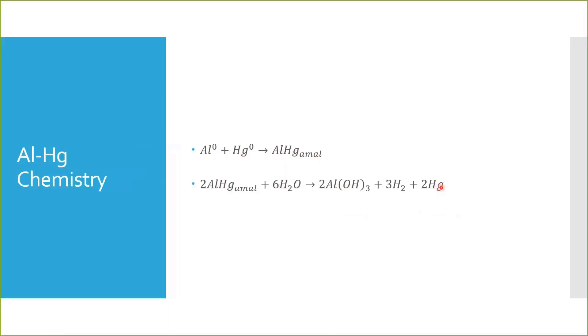So if we have an aluminum surface, the amalgam will constantly reform and then form this oxide. This oxide is not very stable on metal surfaces and is easily removed.